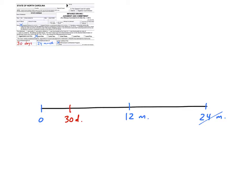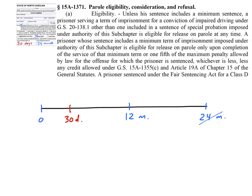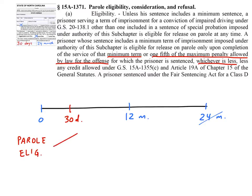With that good time rule in place, our 24-month maximum will actually be served in about 12 months. Now, what about the minimum sentence? DWIs, unlike almost anything else in North Carolina, are eligible for parole. The parole eligibility rule for DWIs is set out in General Statute 15A-1371, which says that an inmate is eligible for parole after serving the minimum or one-fifth of the maximum penalty allowed by law for the offense — the statutory maximum for that level of DWI — whichever is less. So parole eligibility comes at the minimum the court imposes or one-fifth the statutory maximum, whichever is less.